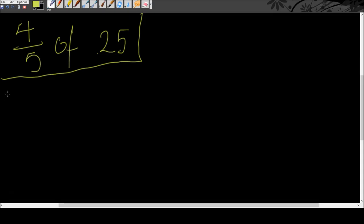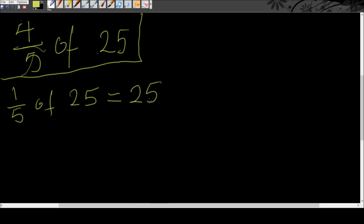So one-fifth of 25 is equal to 25 divided by 5, and 25 divided by 5 gives us 5. We found one-fifth of 25 — we just took 25 and divided it by 5, which equals 5. Don't get confused here — we just had 25 and divided it by 5.